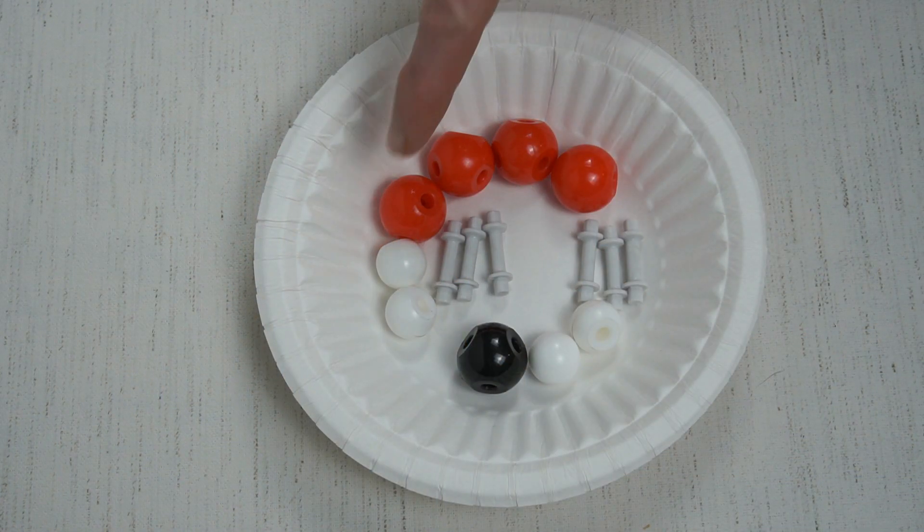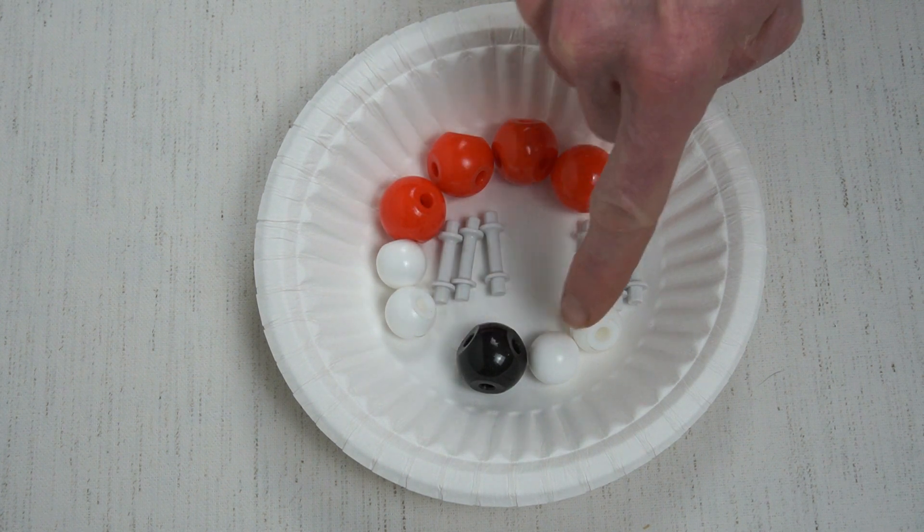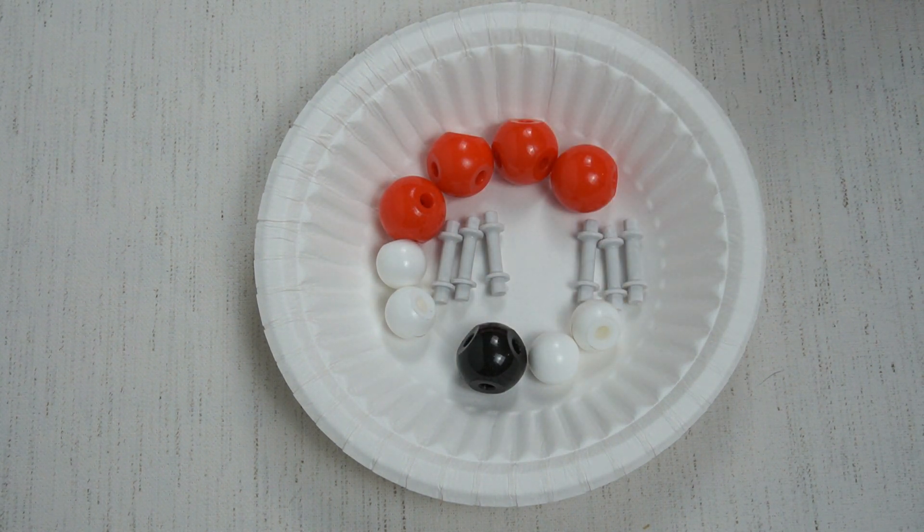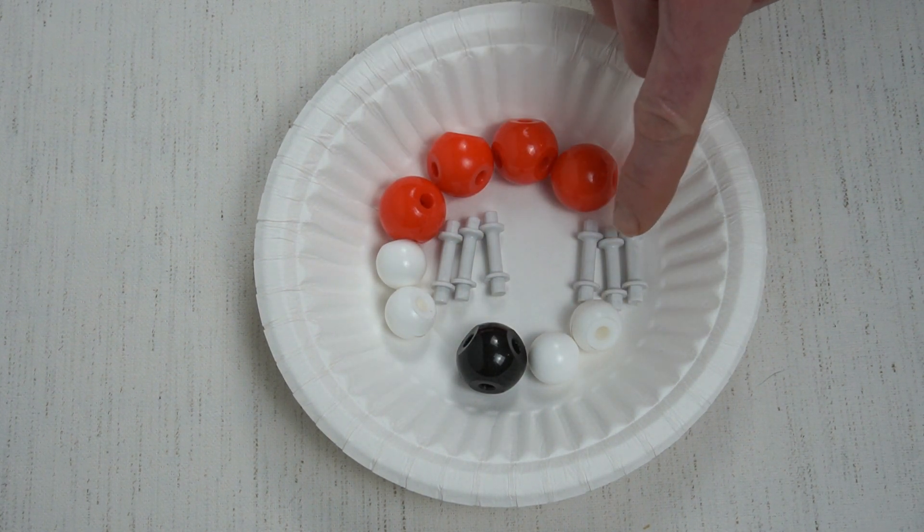So let's get counting our atoms. We have one, two, three, four, five, six, seven, eight, nine atoms in total. And one, two, three, four, five, six electrons. Great.